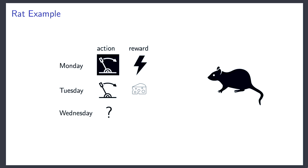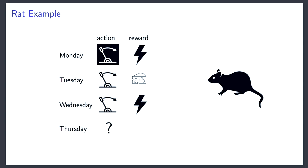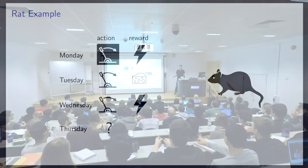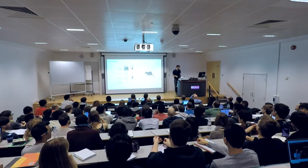Most people would pull the white lever. But let's assume the rat does pull the white one and now it gets a shock. So then the question is, what should it do next? Maybe some of you disagree — could you raise your hand if you would pull the lever with the black background? There's a small minority. We'll get back to this example in depth later.